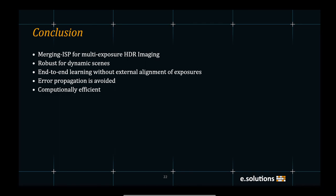So, to conclude, merging ISP is a multi-exposure high dynamic range imaging method. Our method is robust for dynamic scenes. We show that end-to-end learning is beneficial and there is no explicit need for external alignment of exposures. Also, error propagation is avoided and our method is computationally efficient. Thank you.